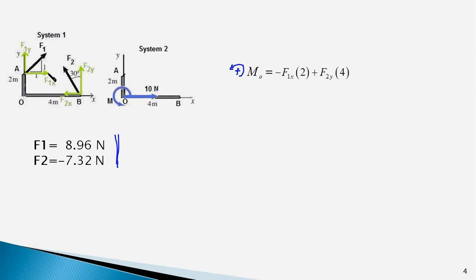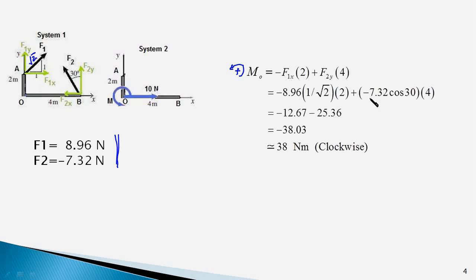Nevertheless, F1x with a moment arm of 2 meters produces a clockwise moment and therefore minus F1x times 2. F2x passes through O therefore its moment about O would be zero. However, F2y would cause anti-clockwise moment about O and the moment arm for F2y would be the distance OB which is 4 meters. So plus F2y times 4. Now we plug in the values of F1x and F2y which is F1x is 8.96 into 1 upon root 2 plus now we plug in the value of minus 7.32 for F2 and F2y is minus 7.32 cos 30. 4 is the moment arm for F2y.